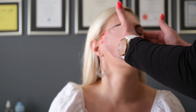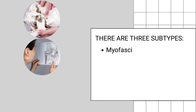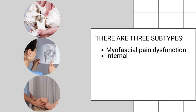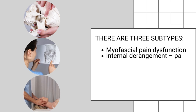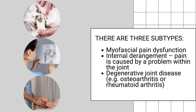There are three subtypes. Myofascial pain dysfunction is due to a problem with the soft tissue structures of the jaw. Internal derangement is due to a problem within the joint, and degenerative joint disease such as osteoarthritis and rheumatoid arthritis.